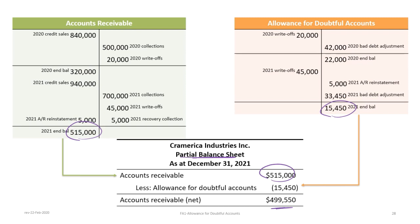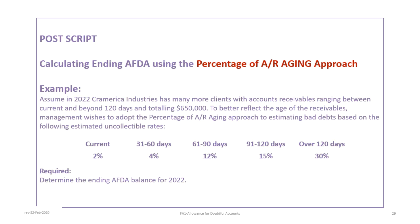We always want to assess the AFDA balance for reasonableness using professional judgment, looking at history, previous write-offs, and bad debts. If management determines the allowance is too high it would be adjusted downwards, and if too low it would be adjusted upwards.